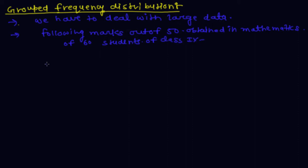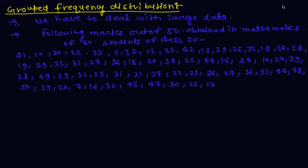So the data includes marks like 21, 10, 30, 22 — these are the marks of 60 students of class 9th out of 50 in mathematics.